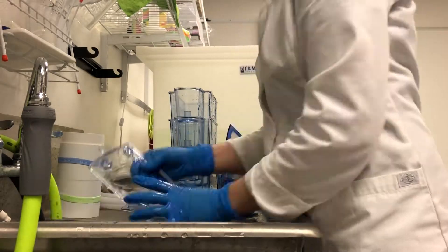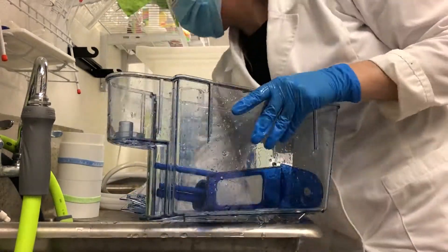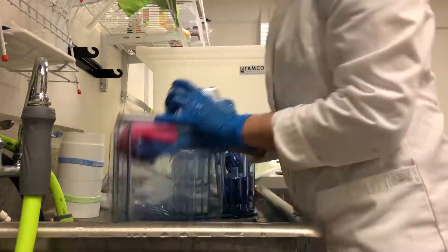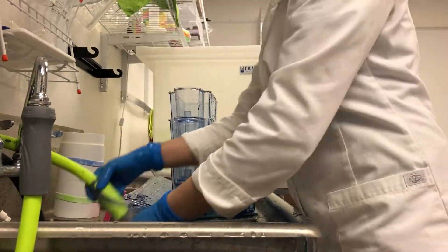We start by cleaning any excess debris off of the dishes using a soft sponge or cloth. We can use tap water at this stage and we will put them into the bleach.